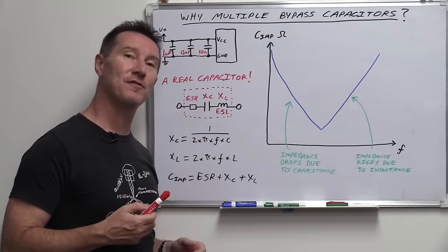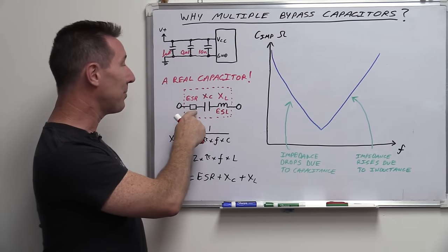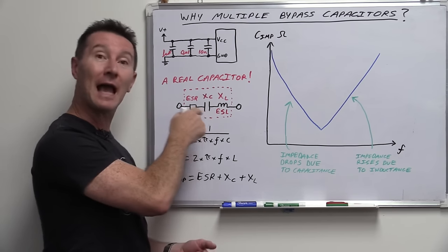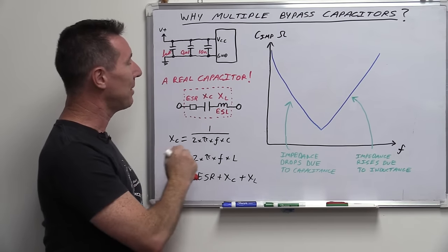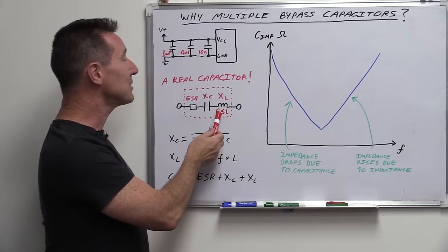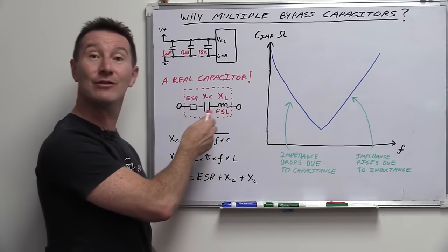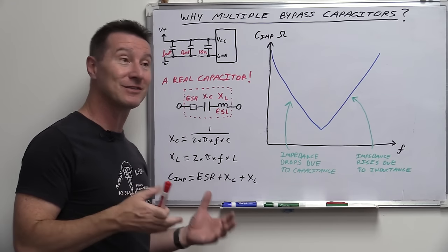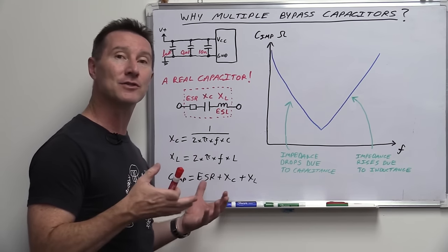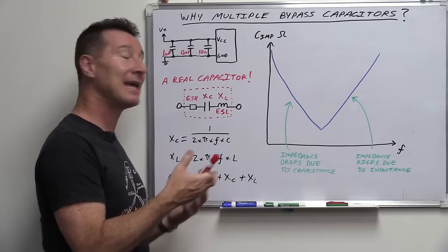In a real capacitor — as I showed in the previous video on electrolytic capacitors — it's not just a capacitor. A real capacitor has an equivalent series resistance, the ESR, which is a constant resistance essentially in series with the actual capacitor. But crucially, there's also a tiny bit of inductance inside a capacitor — lead inductance plus construction inductance. That's called the ESL, the equivalent series inductance. So it's far from ideal: it's an RLC circuit. And with RLC circuits, you can get resonances and all sorts of funny things happening.